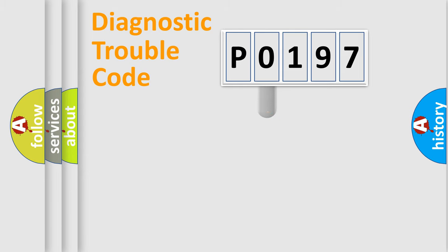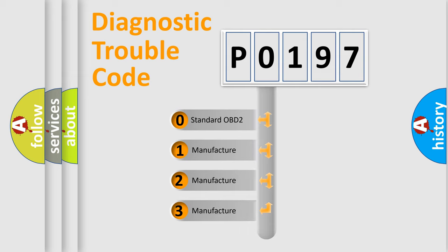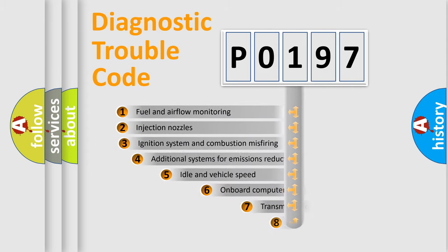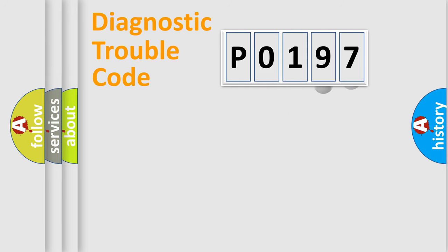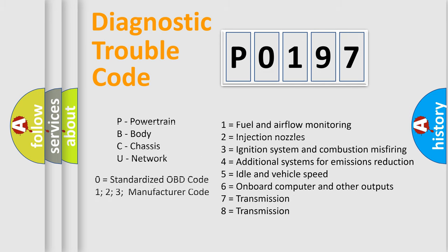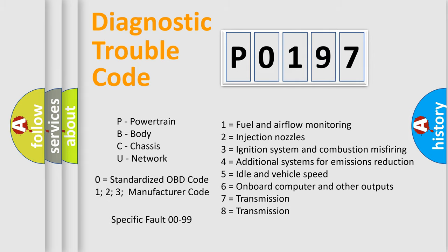This distribution is defined in the first character of the code. If the second character is expressed as 0, it is a standardized error. In the case of numbers 1, 2, or 3, it is a more specific expression of a car-specific error. The third character specifies a subset of errors. Only the last two characters define the specific fault of the group, and this division is valid only if the second character code is expressed by the number 0.